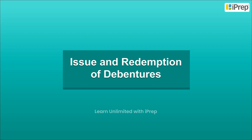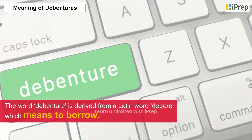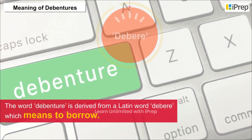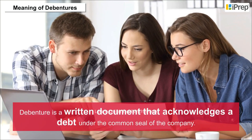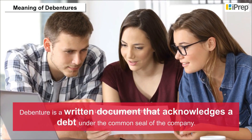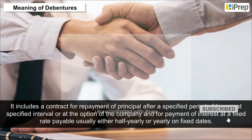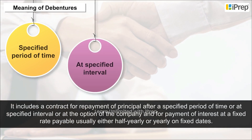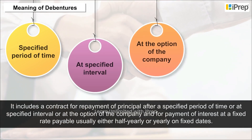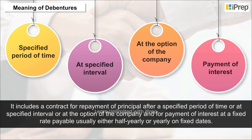Issue and Redemption of Debentures — Meaning of Debentures. The word debenture is derived from a Latin word 'debere', which means to borrow. A debenture is a written document that acknowledges a debt under the common seal of the company. It includes a contract for repayment of principal after a specified period of time or at specified intervals, or at the option of the company, and for payment of interest at a fixed rate, payable usually either half-yearly or yearly on fixed dates.